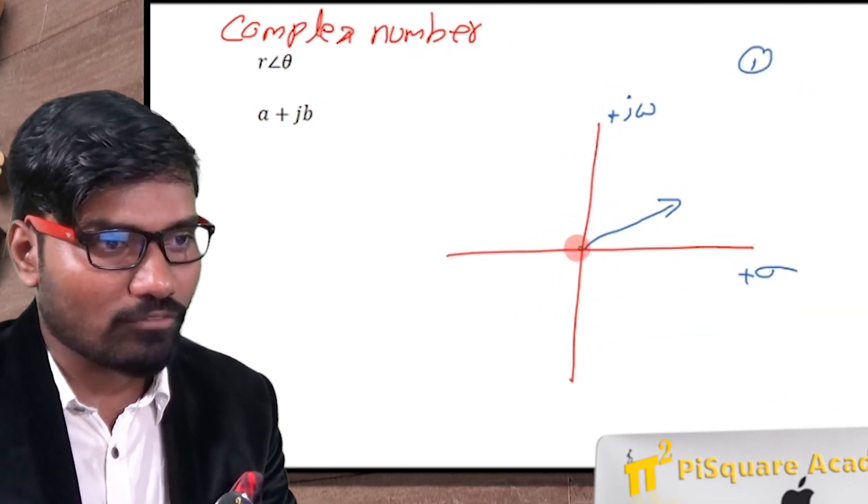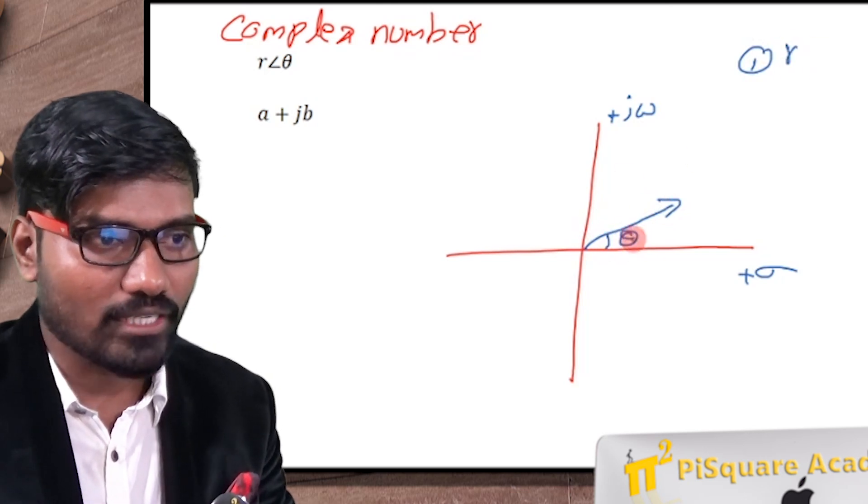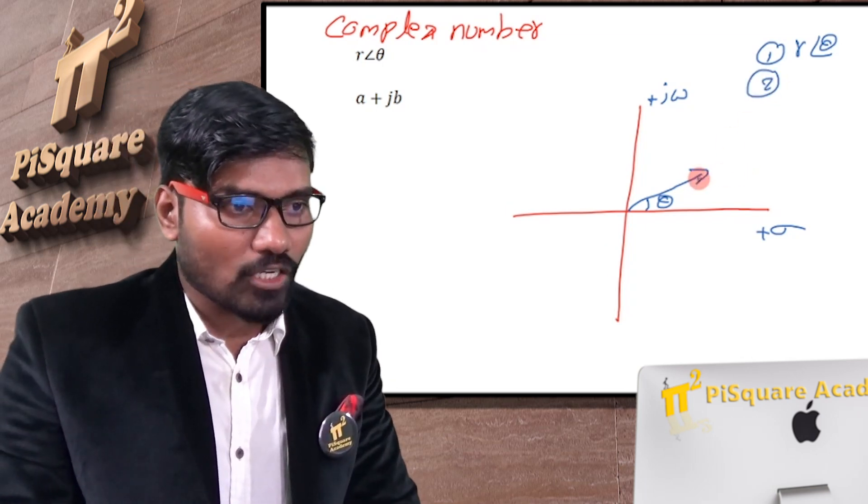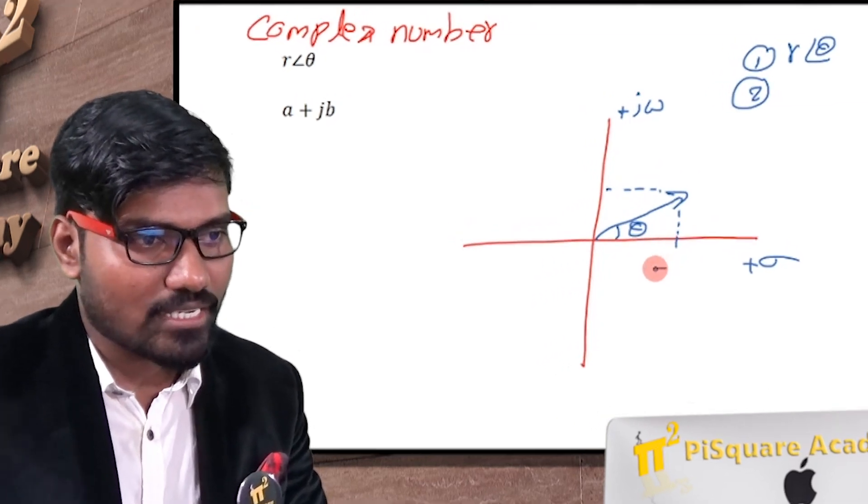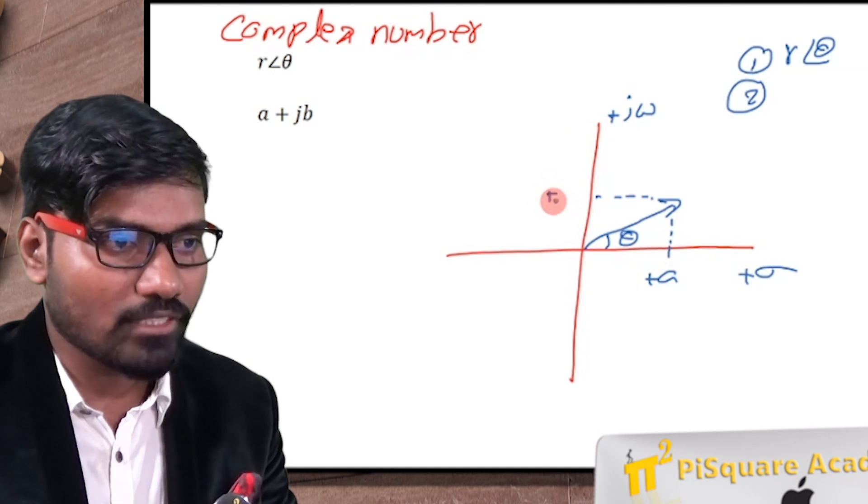One is with the magnitude of this line, that is r, and the angle theta, r at an angle theta. This is the first representation. Second representation is I can give the coordinates of x as well as y, that is plus a because it is a positive axis and this is plus j omega. So we'll represent it plus jb.